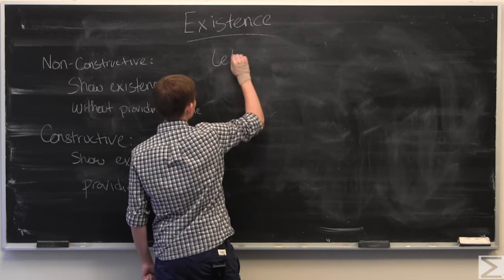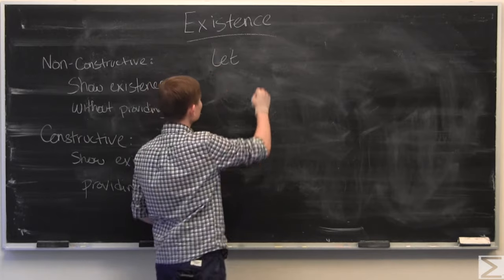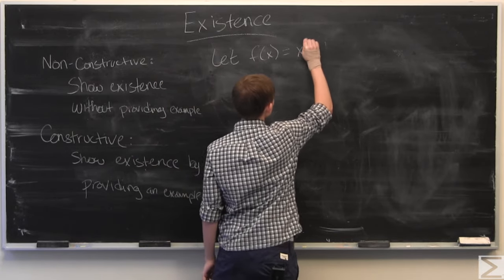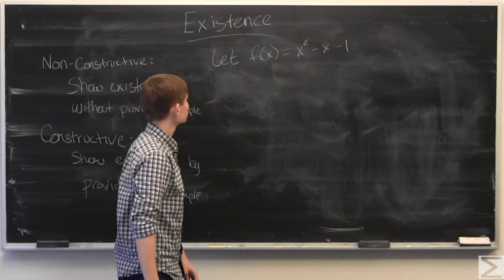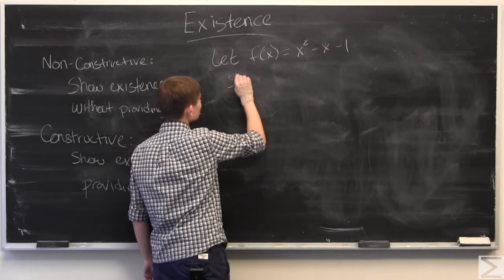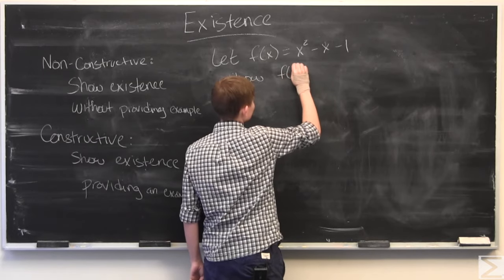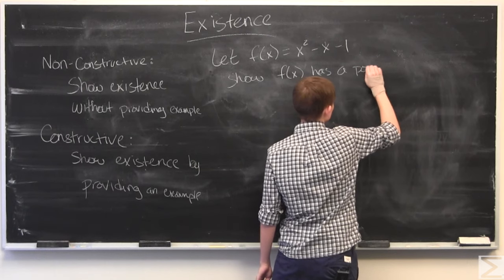Let's have our assumption be let f(x) equal x squared minus x minus 1, and we want to show that f(x) has a positive root.